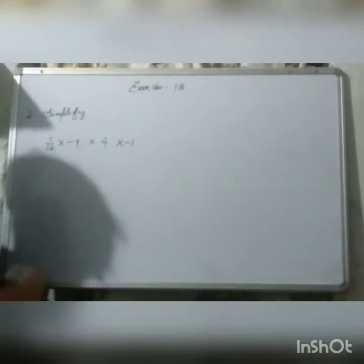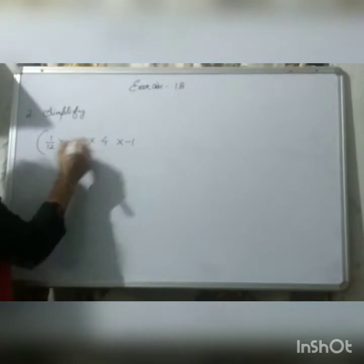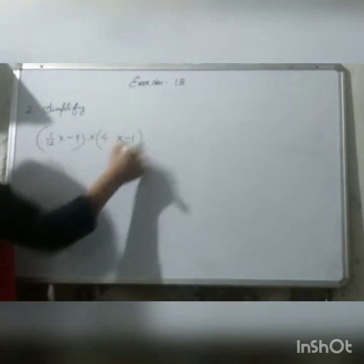Now, come to the second question. Simplify. This is the question here: 1 by 12 into minus 9 and 4 into minus 1.